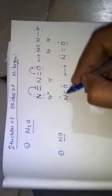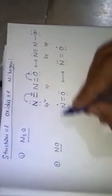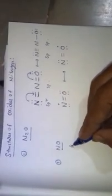This electron from Oxygen combines with the unpaired Nitrogen electron and pairs. When paired, 1 unpaired electron still remains. So 1 electron is shared by both atoms, forming a 3-electron bond. Due to the presence of this unpaired electron, Nitric Oxide has paramagnetic nature.